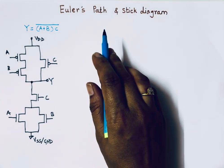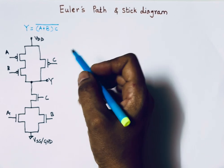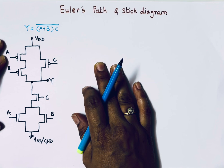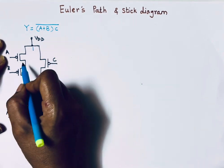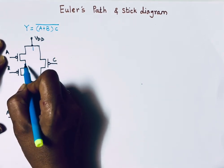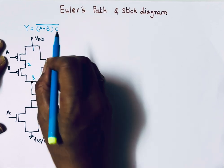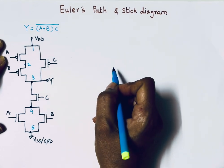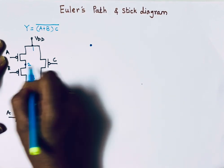Now let's draw Euler's path. Euler's path is a graph that traverses every edge only once. First, we mark the nodes. The first connection is marked as node one, the second connection between the two MOSFETs is node two, the next is node three, then node four, and then node five. To draw Euler's path, I'll mark these nodes as dots.